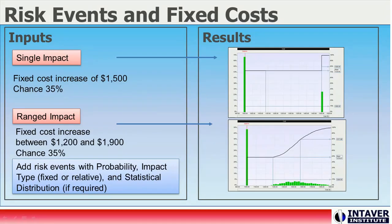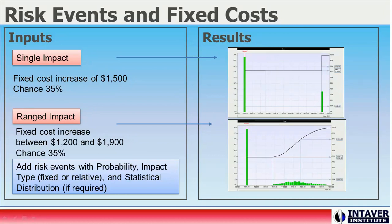Risk events are risks found in the risk register. They have a probability of occurring and an impact. Probabilities are between 0 and 100%. Impacts can be fixed or relative — a percentage of the base cost — and can be a discrete value or modeled as an uncertainty with a range of values defined by a statistical distribution. In the first example with a discrete impact, the risk appears as a single bar in the histogram. In the second example with a ranged impact, the risk appears as a small distribution to the right of the base estimate. As we can see, the way we choose to model the risk can have a significant impact on the results.